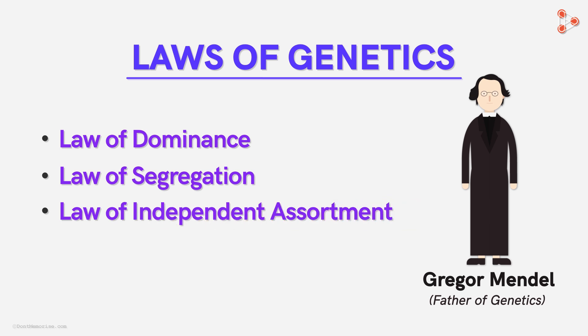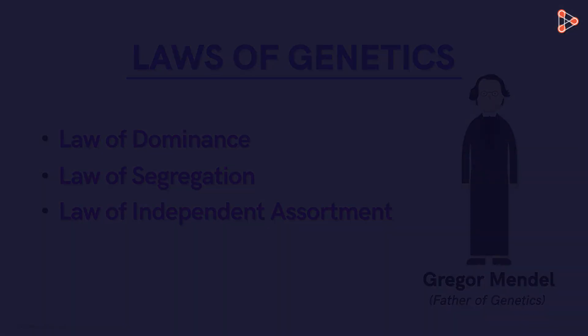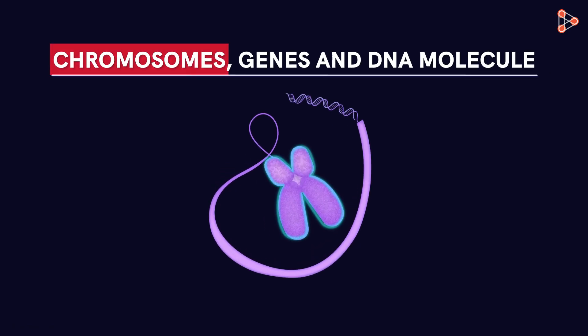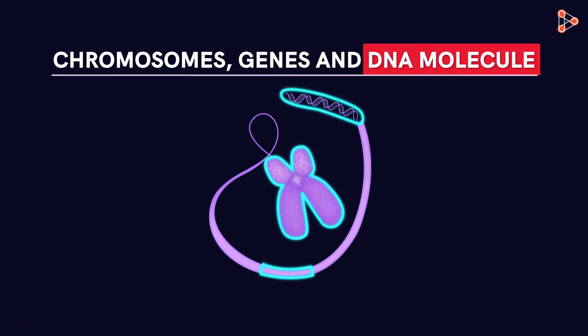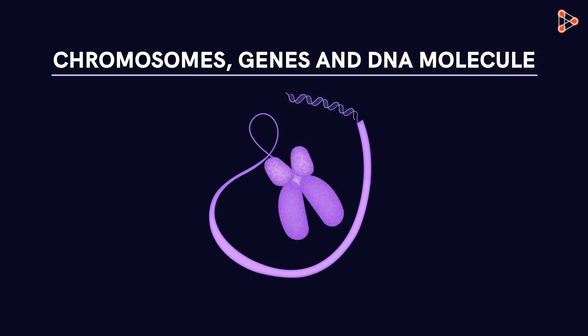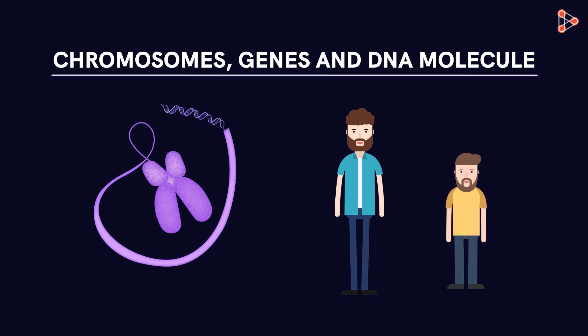These laws not only help us in understanding genetics, but also have several real life applications. Later we will get introduced to the concept of chromosomes, genes and the DNA molecule, and what these are made up of. These structures in the living cell literally define the characteristics of all living organisms on earth.